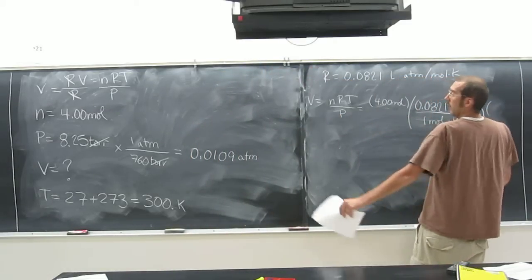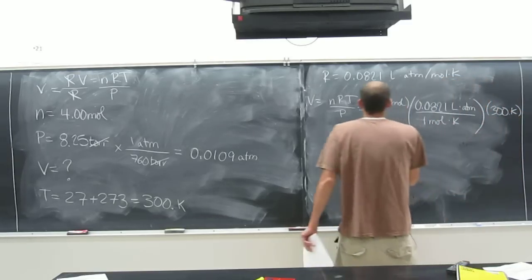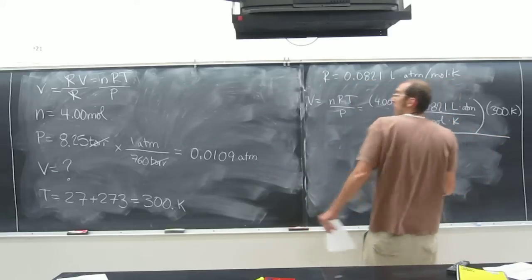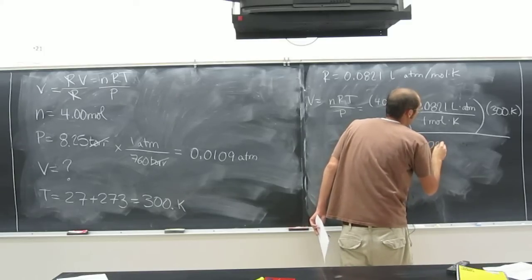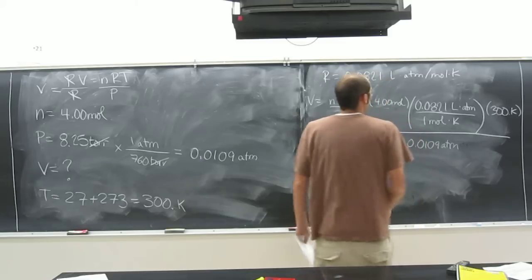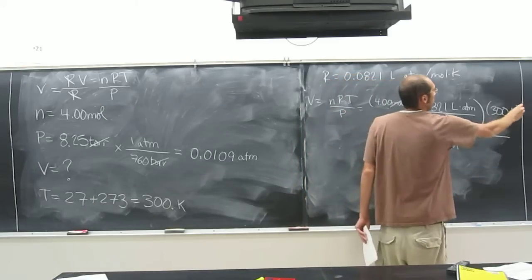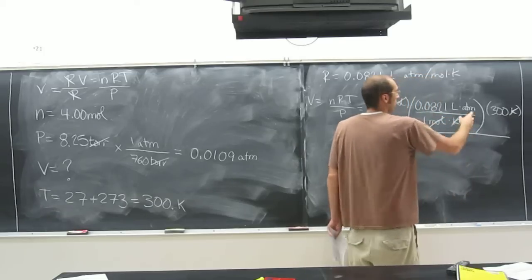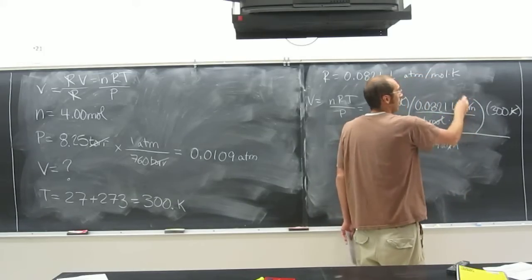And then T. What's T? 300. And then all divided by 0.01098. Okay? So cancel. We got numerator, denominator, moles. Kelvin, numerator, denominator. Atm, numerator, denominator. Left with liters.